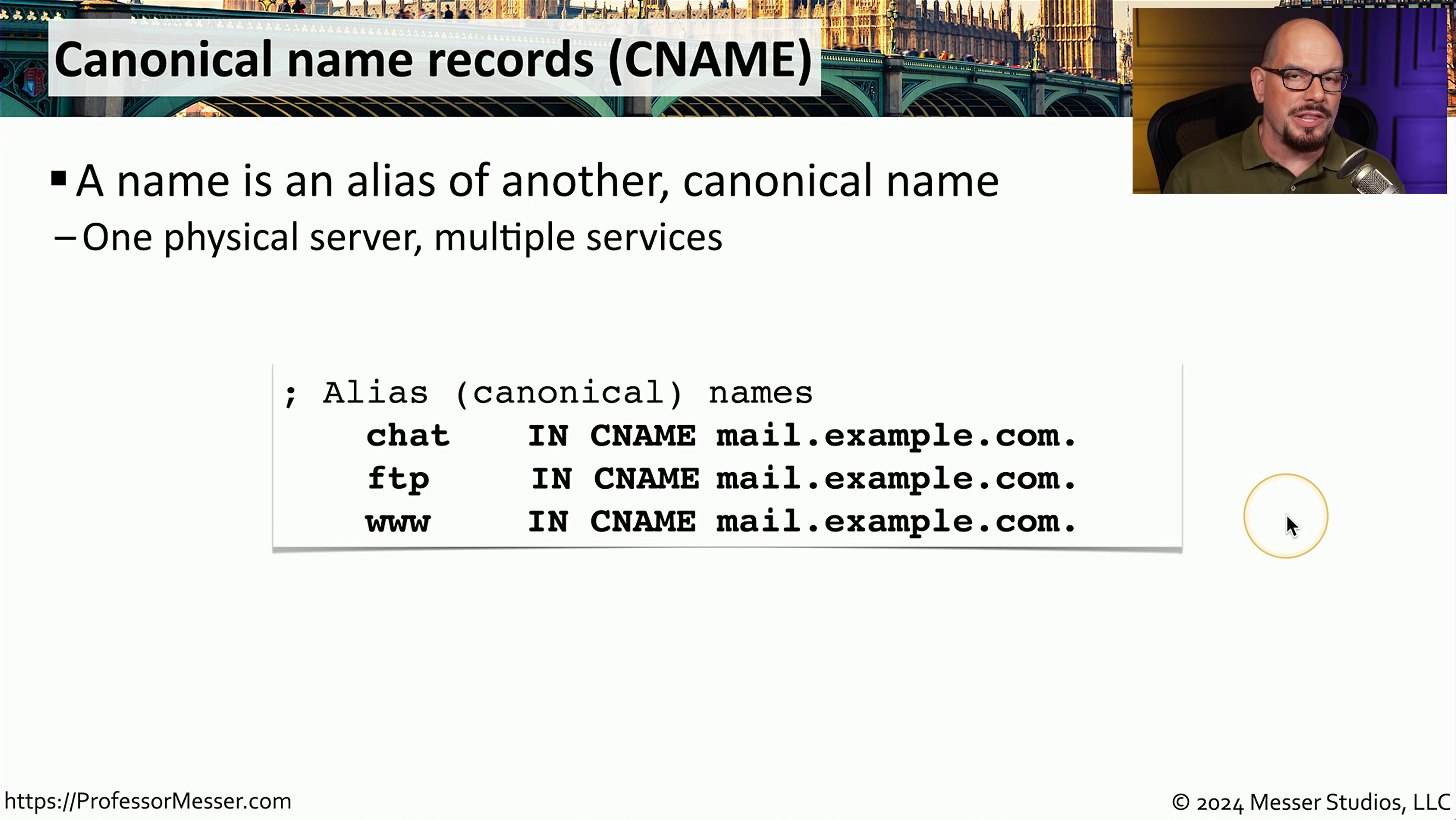This actually means that there will be multiple requests made if someone was to query www.example.com. The DNS server recognizes that you're looking for www, and it provides your client with the name mail.example.com. If you already know the IP address of mail.example.com, then the transaction is over. But if that information is not cached on your machine, a separate request will be made to the DNS server to resolve the IP address for mail.example.com.